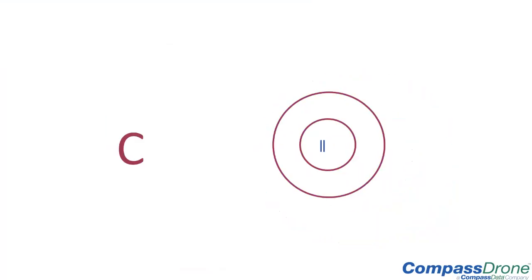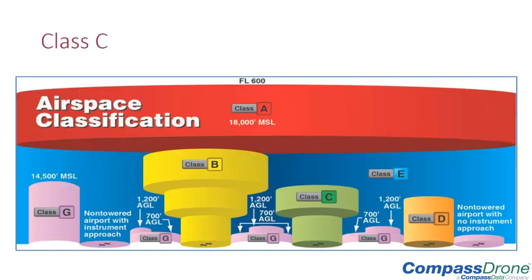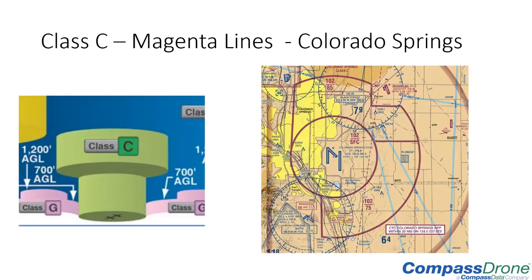Similar to Bravo is Class Charlie airspace, depicted in thick magenta lines. Bravo can be complex with multiple tiers; Charlie can be less complex. Colorado Springs is a great example — airplanes are protected coming in and out, with the airport controlled to the surface within a certain radius. As you get further out, the Charlie airspace has a floor of 8,500 feet rising to 10,200 feet, forming a wedding cake shelf. Class Charlie airports are very busy and you definitely need to coordinate before operating a drone there.